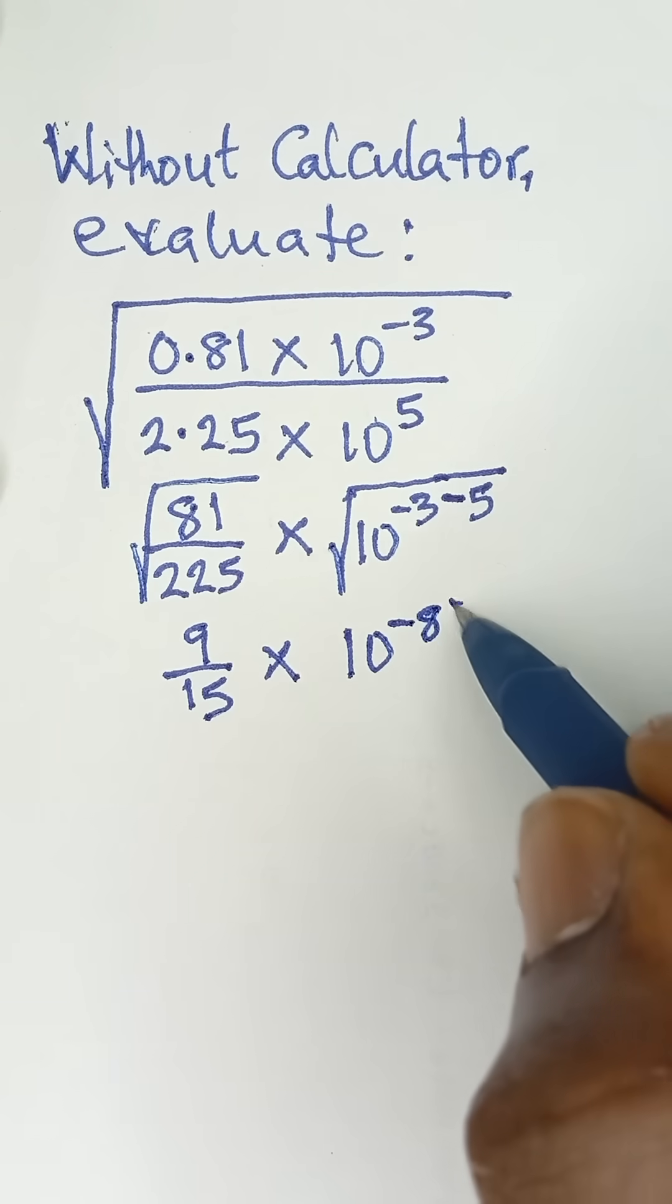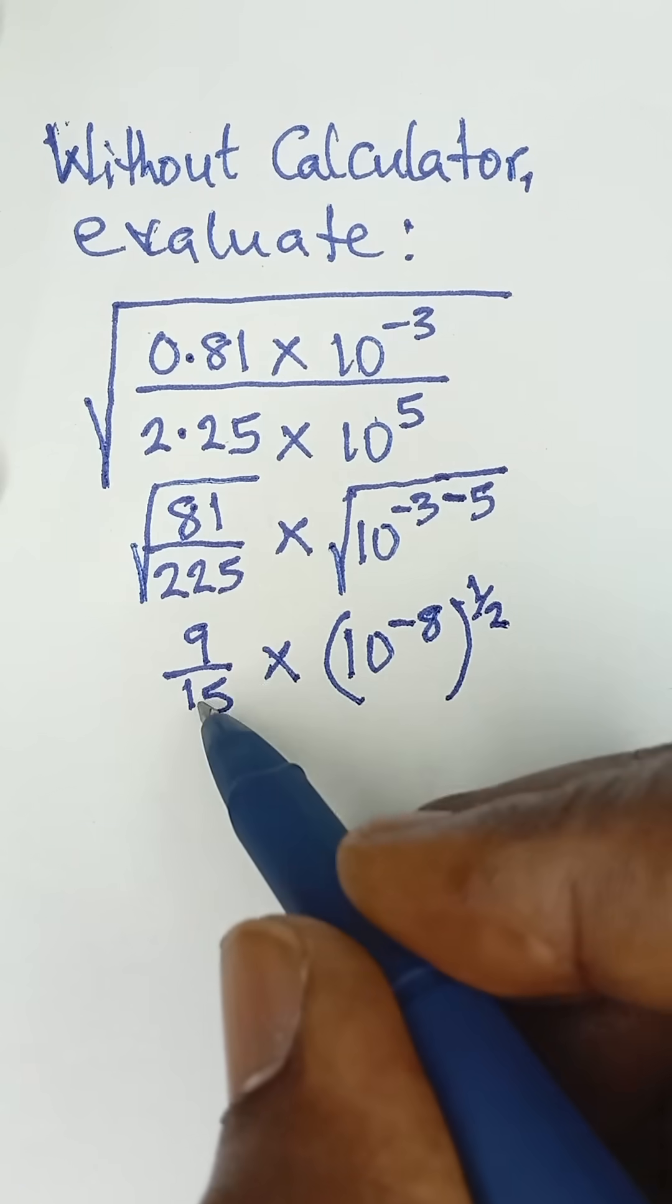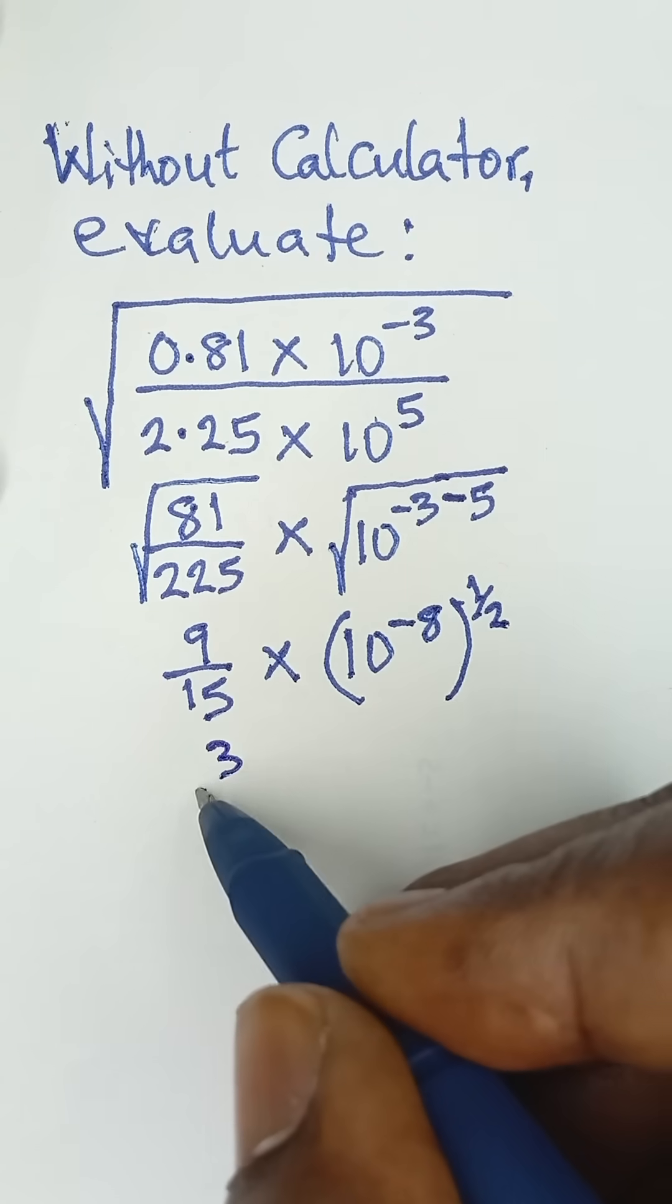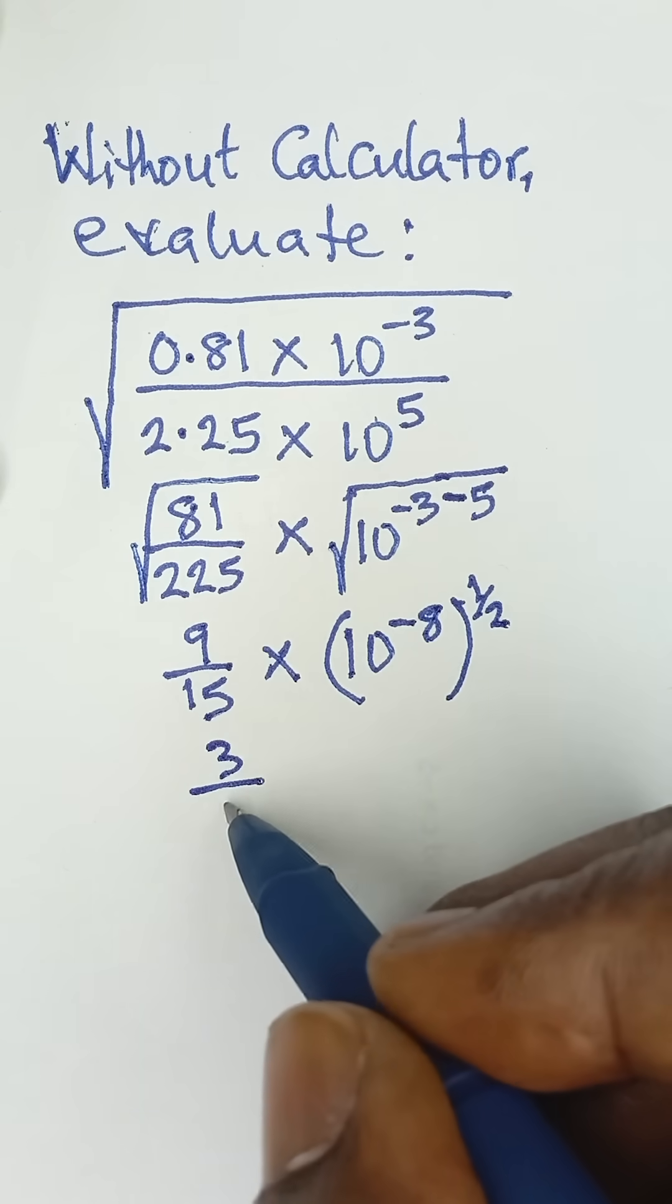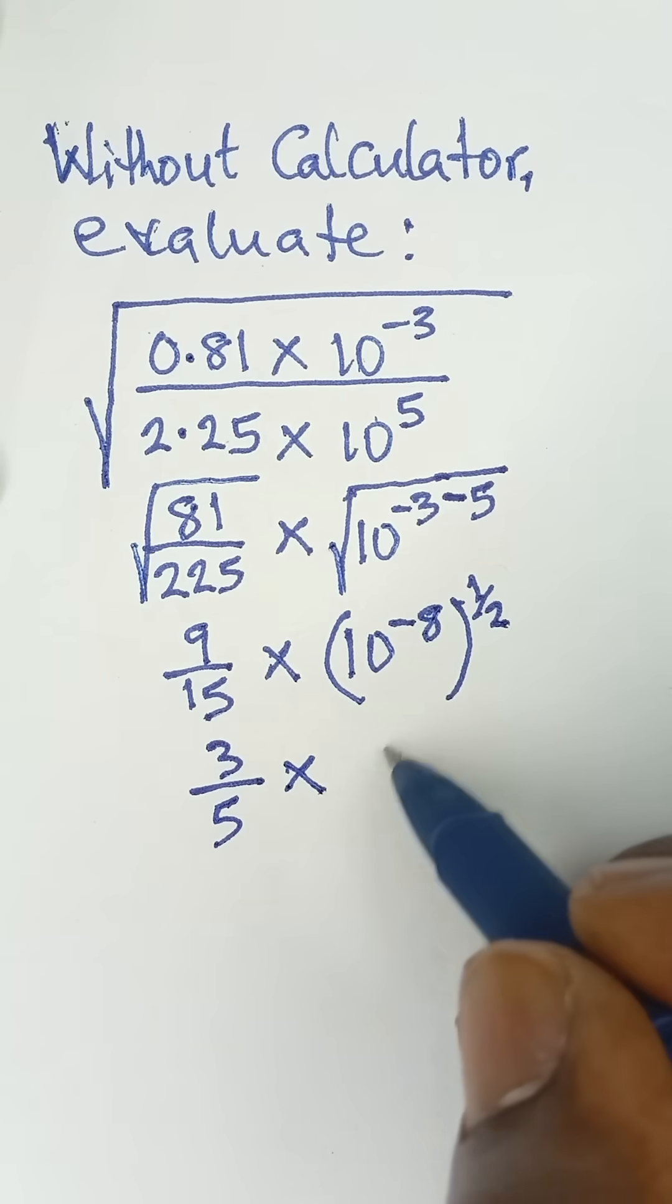And then because of this root sign, square root sign means raised to the power of half, so this becomes in its lowest term: 3 in 9 is 3 all divided by 3 in 15 is 5.